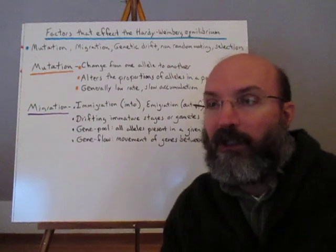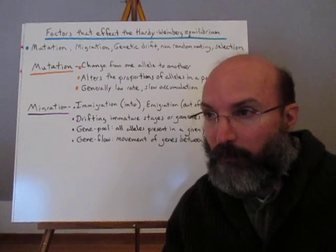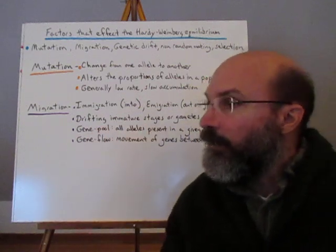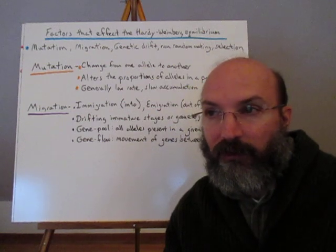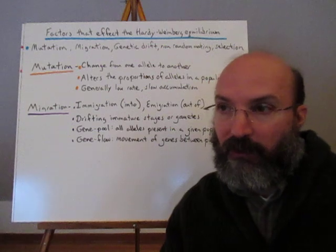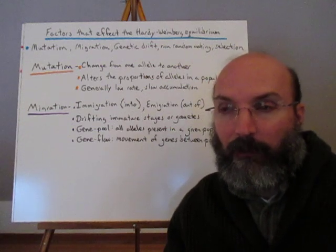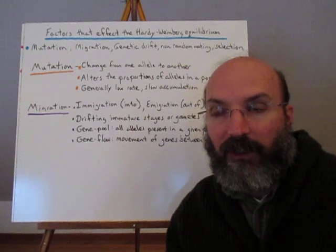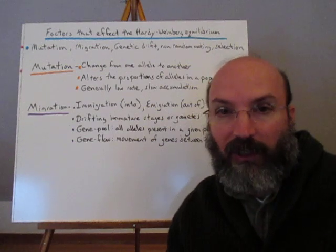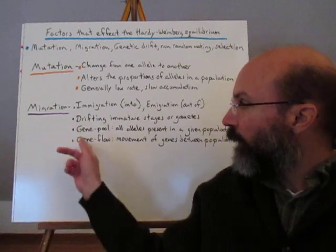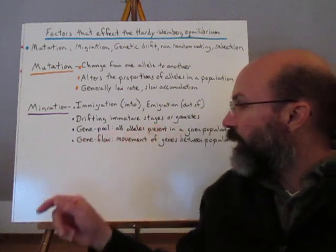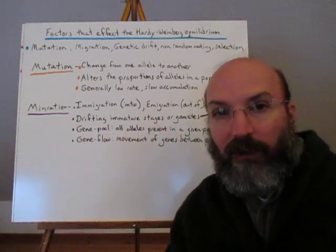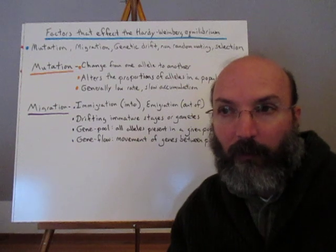Migration refers to immigration and emigration into or out of populations. Many planktonic forms, oceanic creatures, and aquatic organisms have larval stages that drift with currents. As new genes flow into or out of populations, gene frequencies can change. The gene pool refers to all the alleles present in the population, and gene flow is when these alleles move from one population to another.